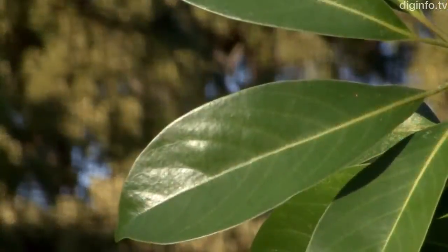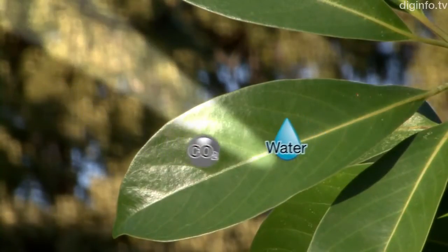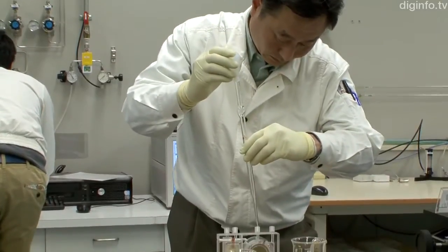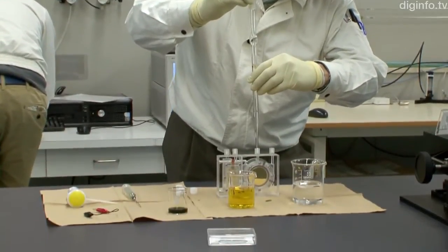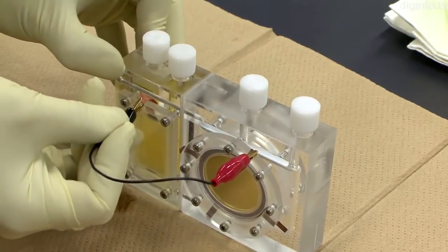Artificial photosynthesis is a technology that uses sunlight to produce oxygen and organic substances from water and carbon dioxide, like plants do. As an ideal technology that could solve both global warming and energy issues, artificial photosynthesis is currently being researched worldwide.